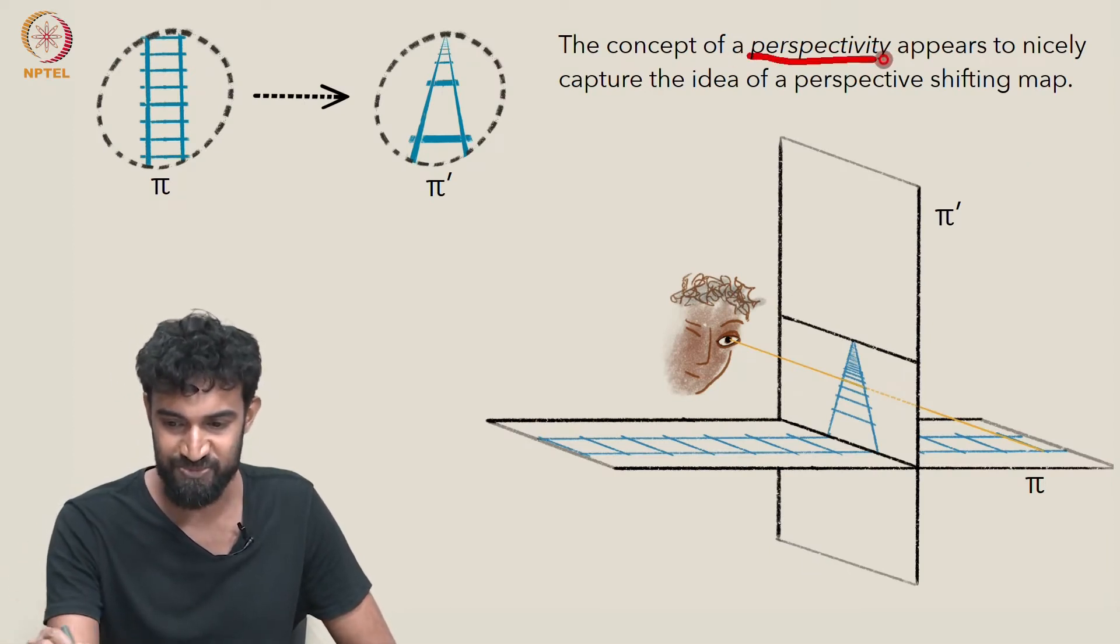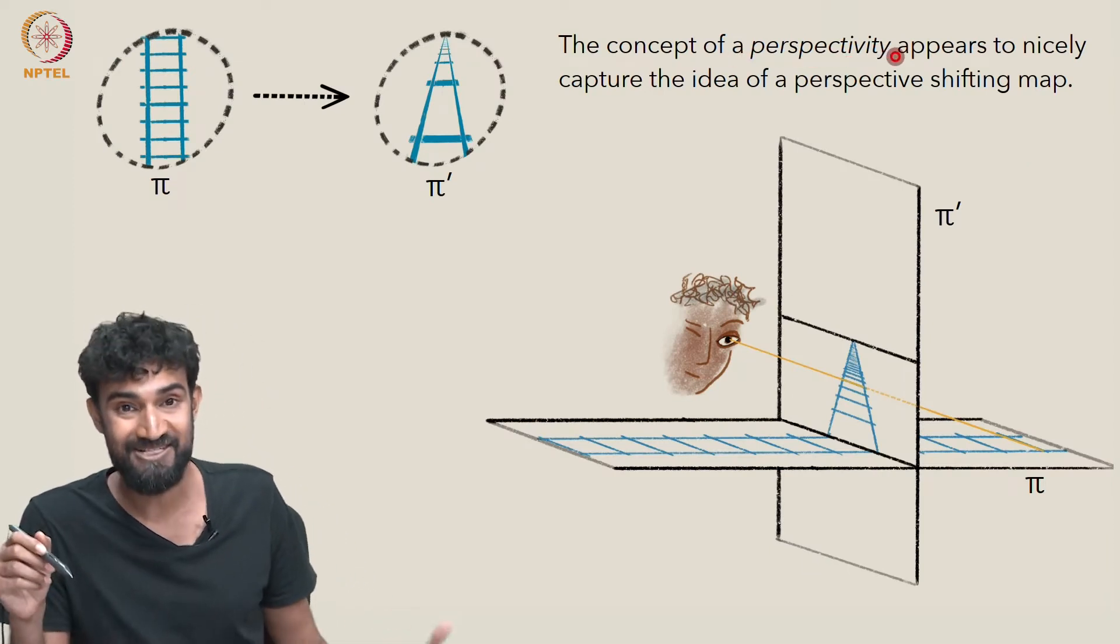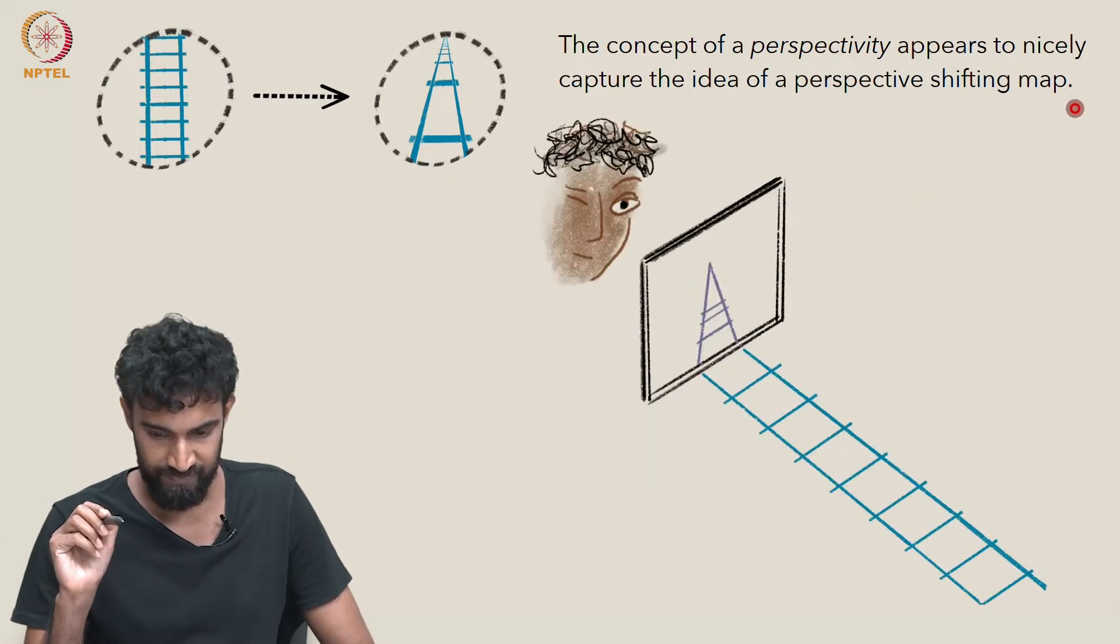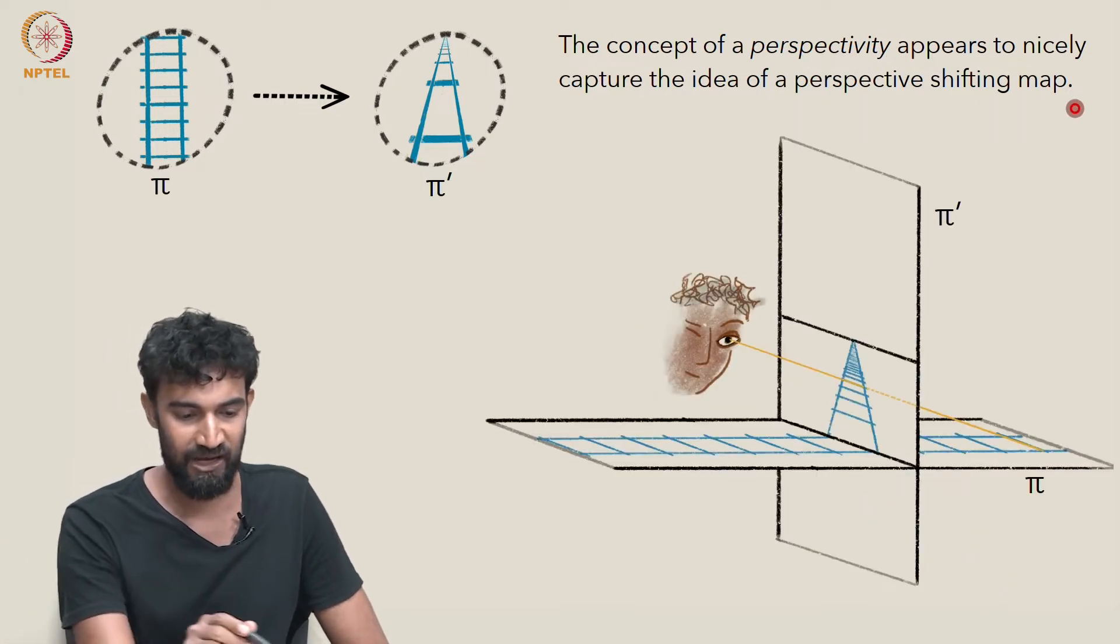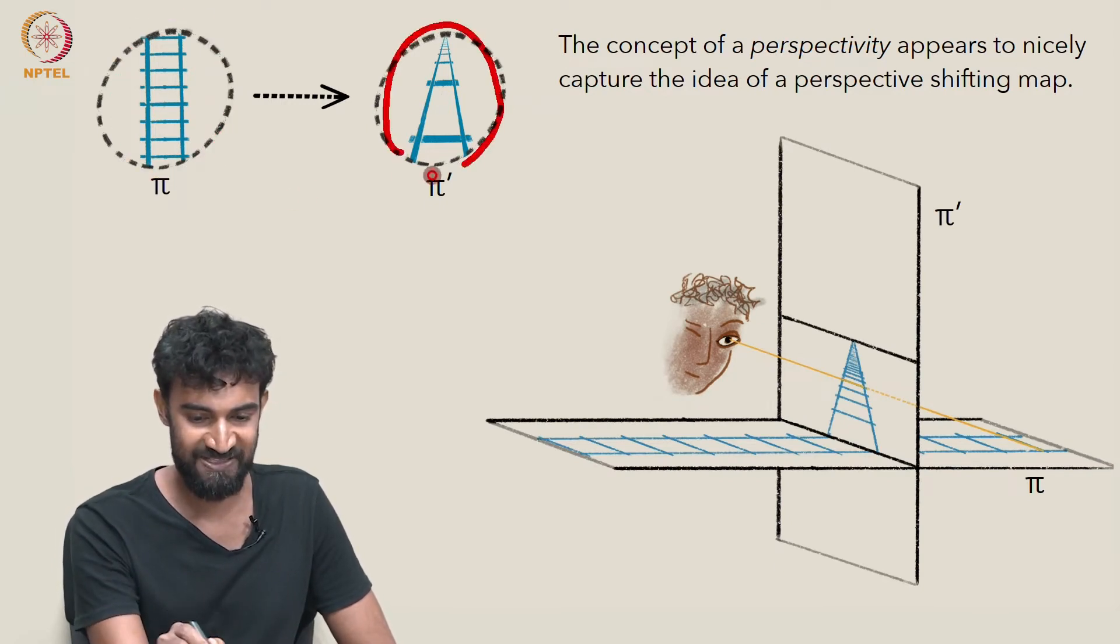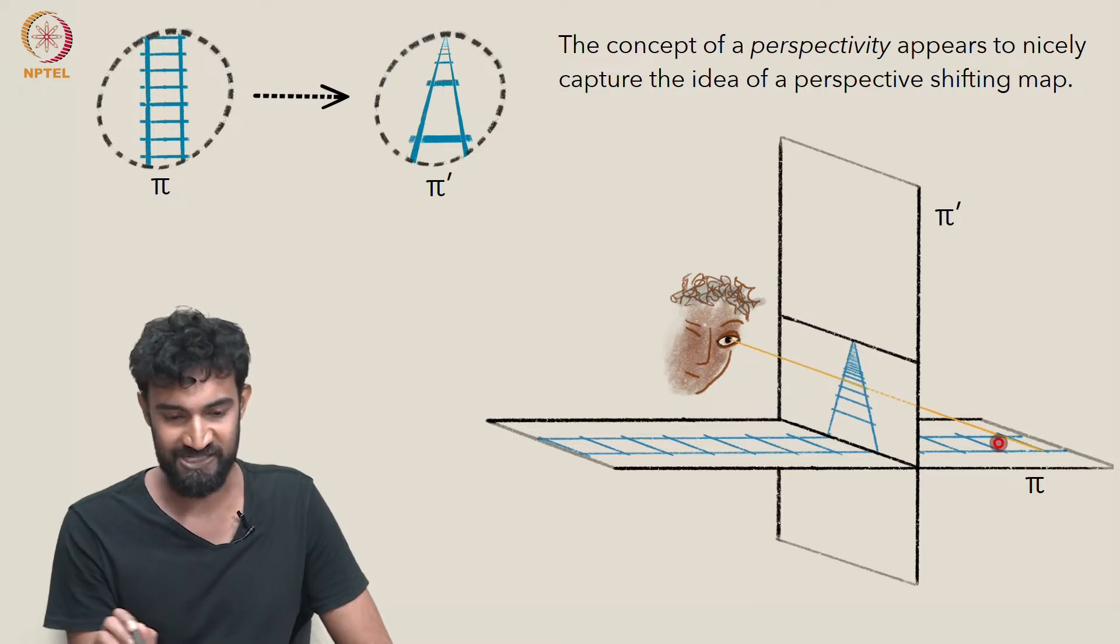So the concept of a perspectivity appears to nicely capture the idea of a perspective shifting map. This perspective view maps to this perspective view under a perspectivity.